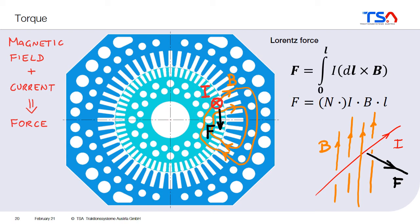Finally, we now use the third equation from chapter 2, which is the Lorentz force. The Lorentz force tells us that if we have a current — in this case a current in our rotor bars — and if we have a magnetic field — in this case the magnetic field coming from the stator to the rotor — they together produce a force. And this force results in the torque of the electric machine. So basically, we can understand now how the induction machine works.